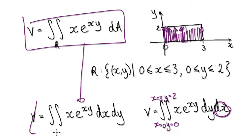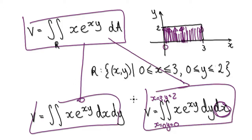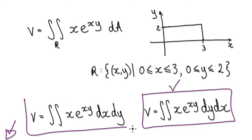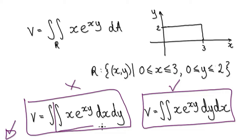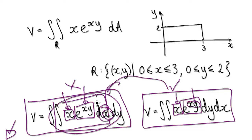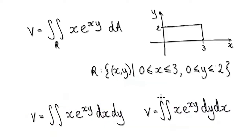You can use either method. However, the dx dy method is long-winded because you have to integrate with respect to X first, and both blocks contain X, requiring integration by parts. With dy dx, the X term is a constant when integrating with respect to Y, making it much easier.